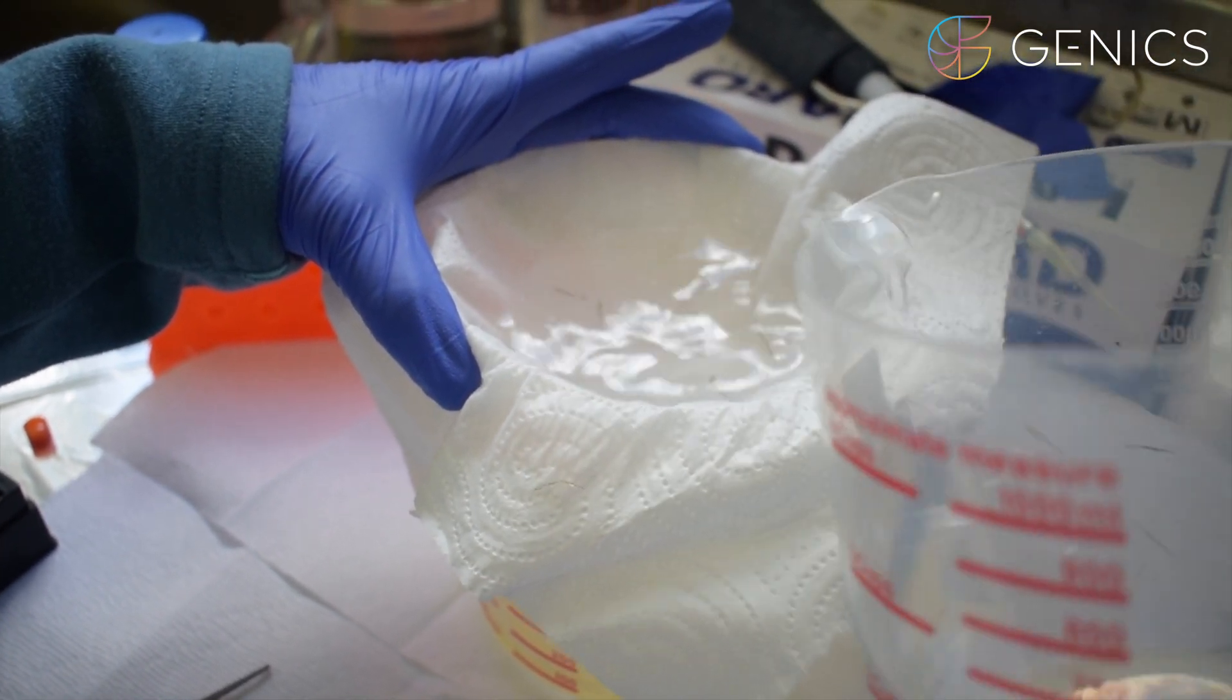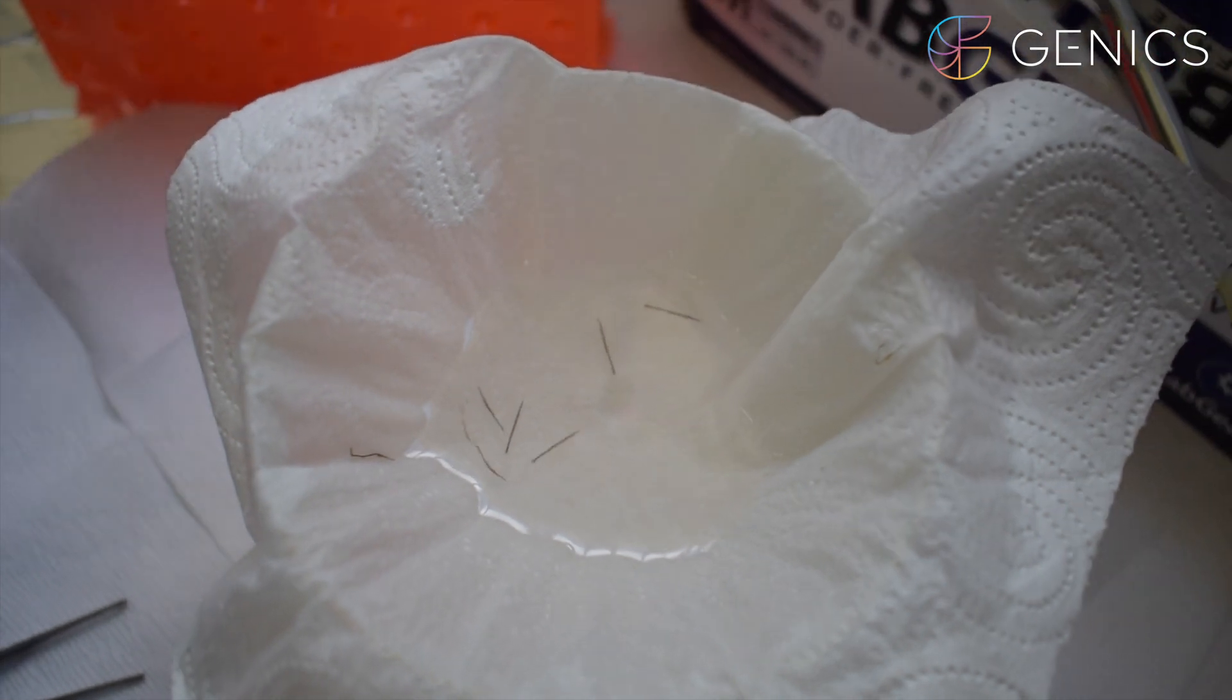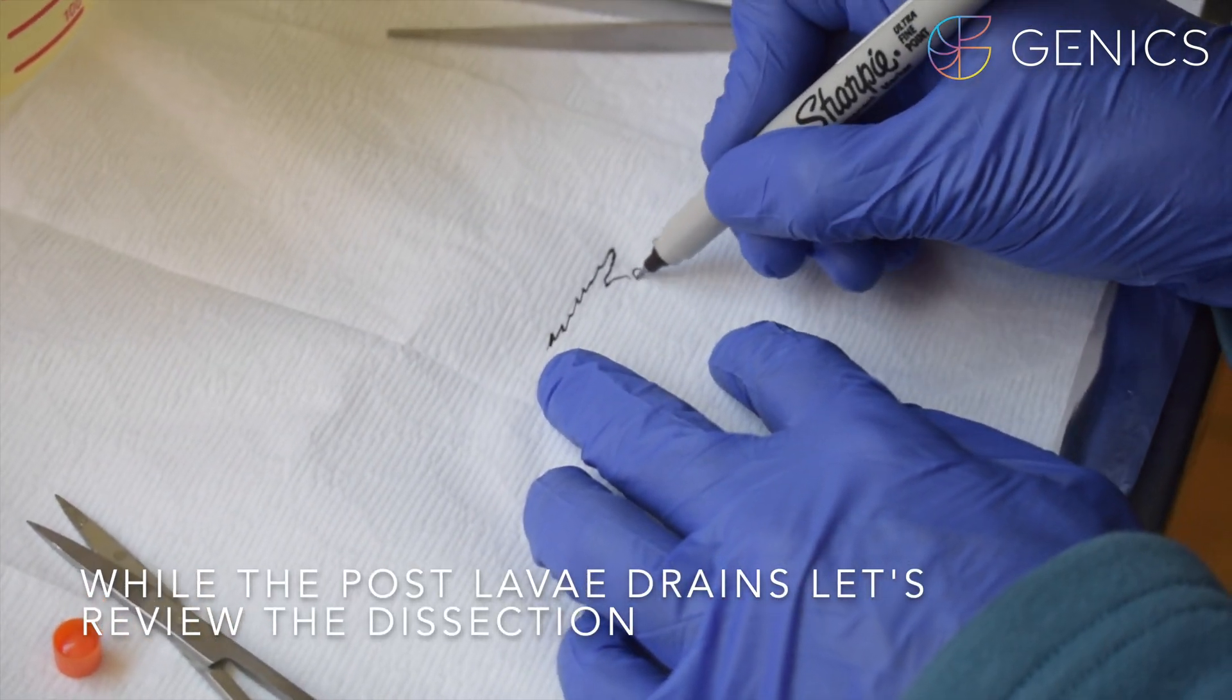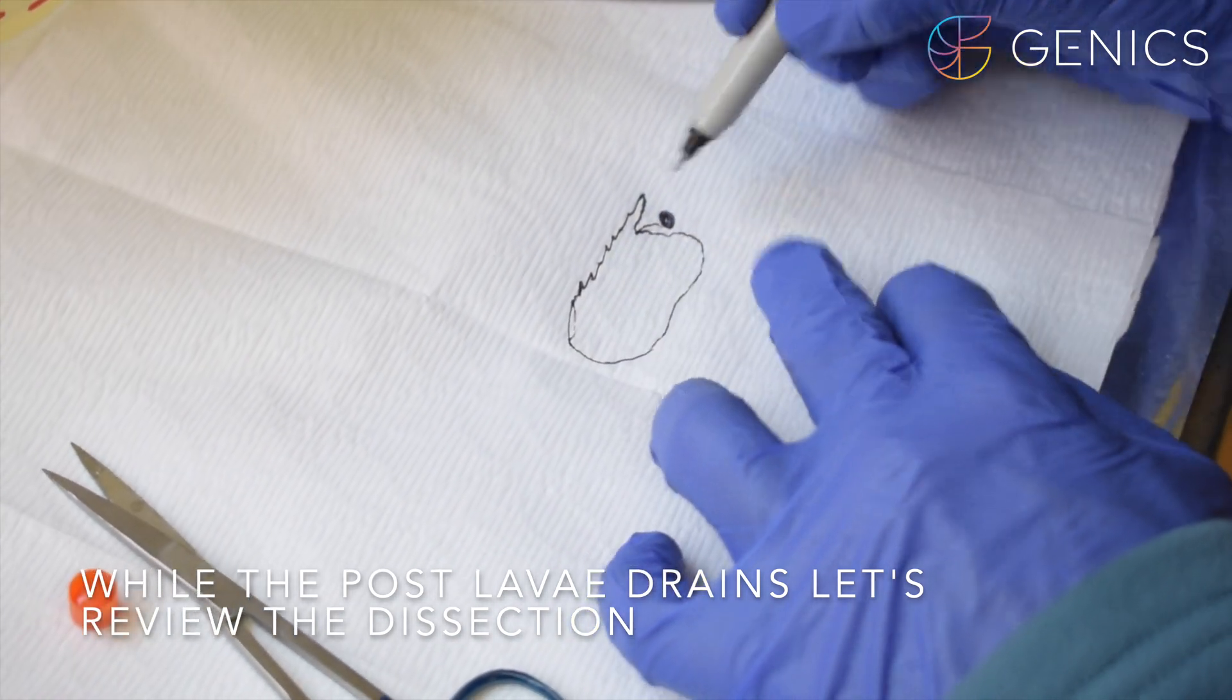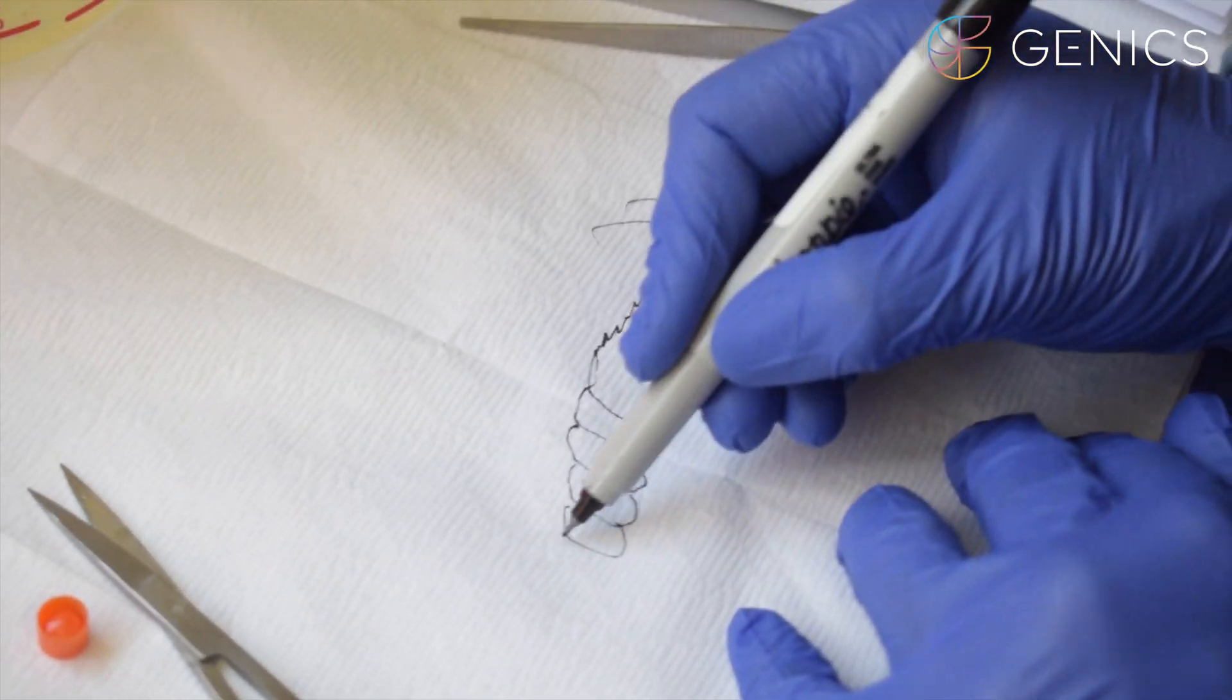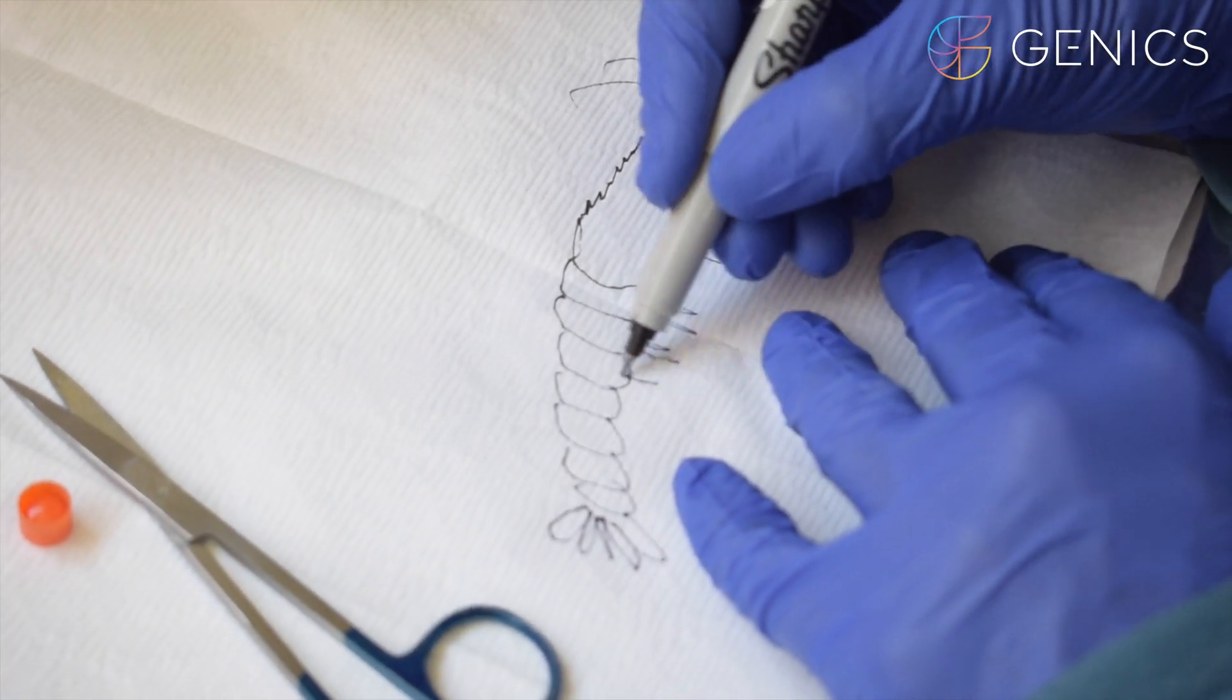Whilst we wait I will draw you an image of what we are about to sample. Here we have our post larval shrimp head, our eye, shrimp antennae, periopods, shrimp tail muscle and pleopods.